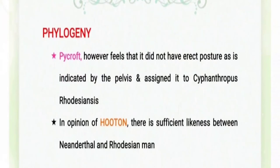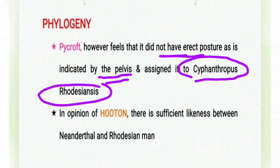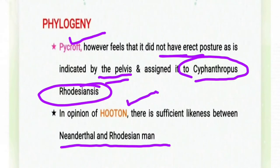Pycroft feels that the Rhodesian Man does not have the erect position, as indicated through the pelvis, and has therefore placed the Rhodesian Man in Siphonthrophus rhodesiensis. In the opinion of Houghton, there is sufficient likeness between the Neanderthal and the Rhodesian Man. So both Pycroft and Houghton consider the Rhodesian Man more similar to the Neanderthal, whereas Woodward considers it much closer in resemblance to Homo sapiens.